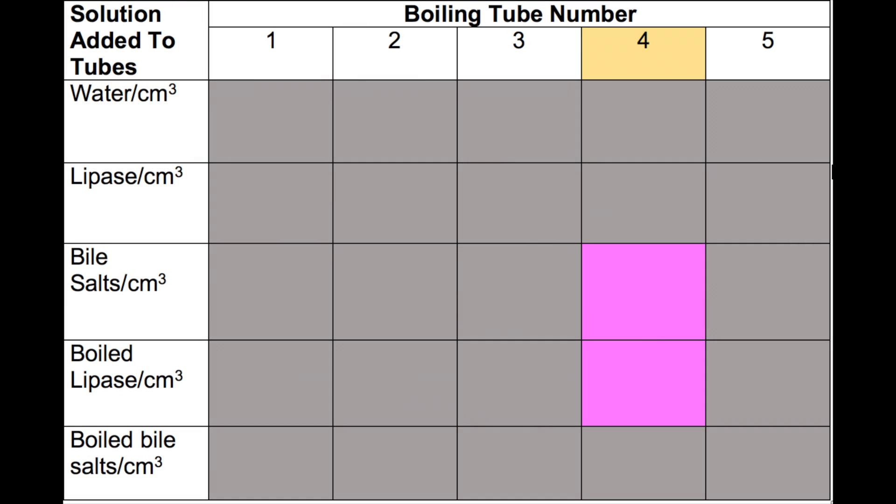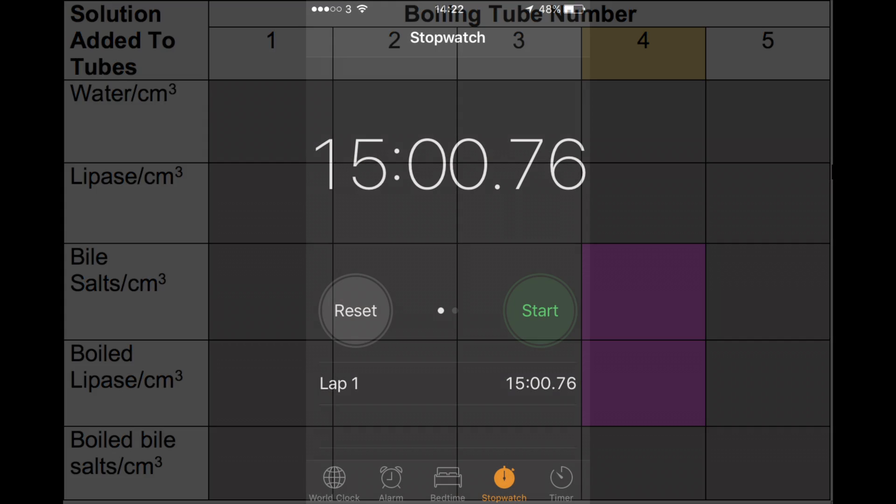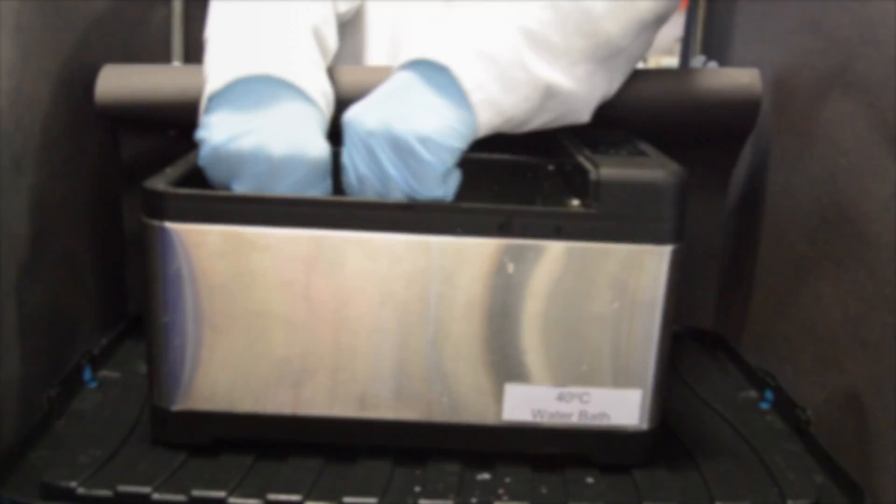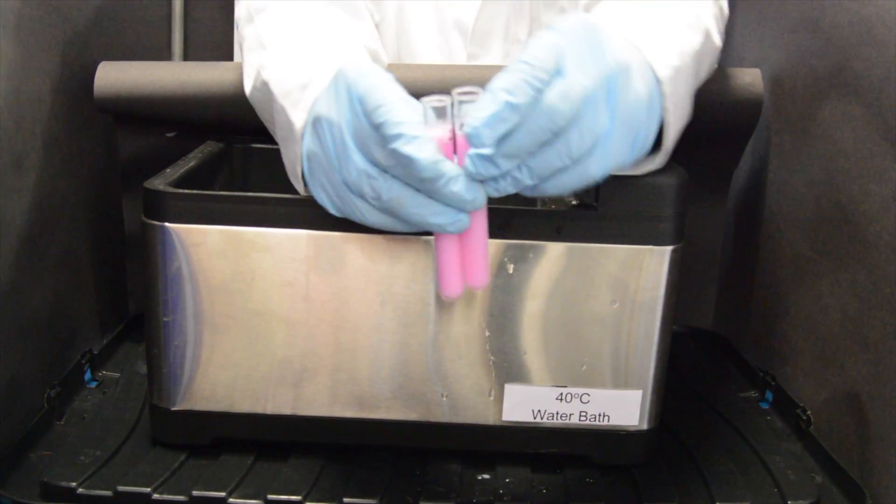The phenolphthalein in tubes 2 and 4 were left in the water bath for 15 minutes. Neither of the tubes' contents had decolorized the phenolphthalein indicator during this time.